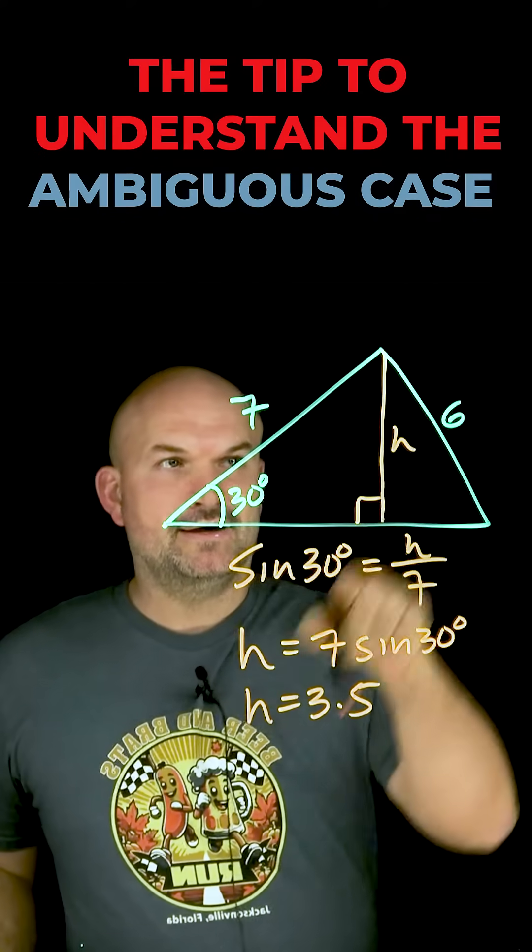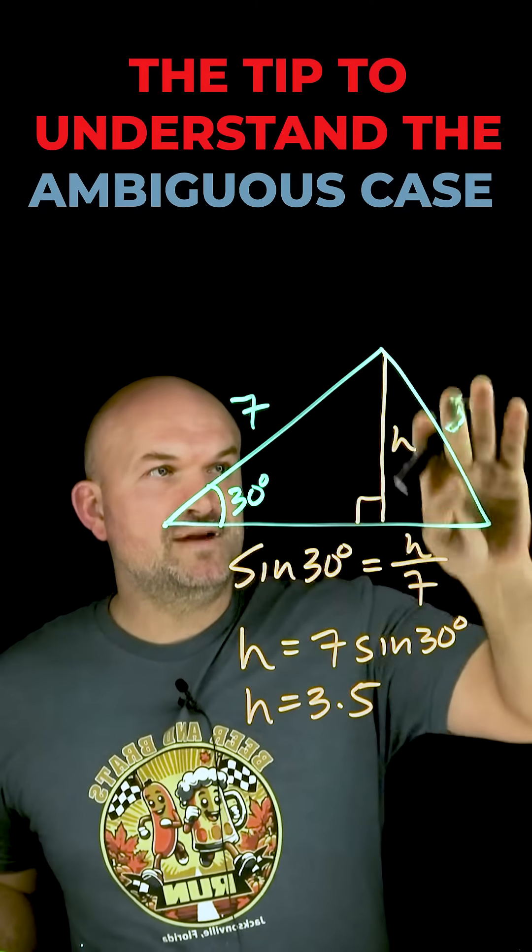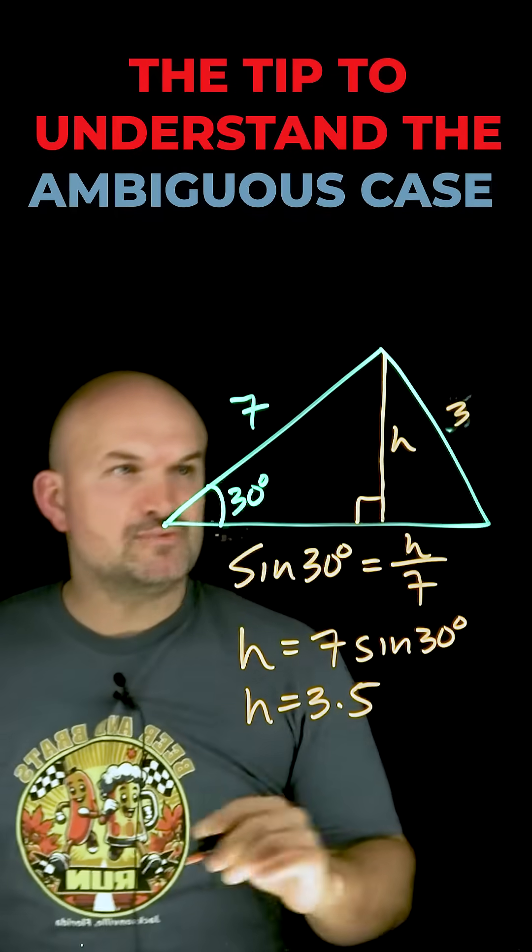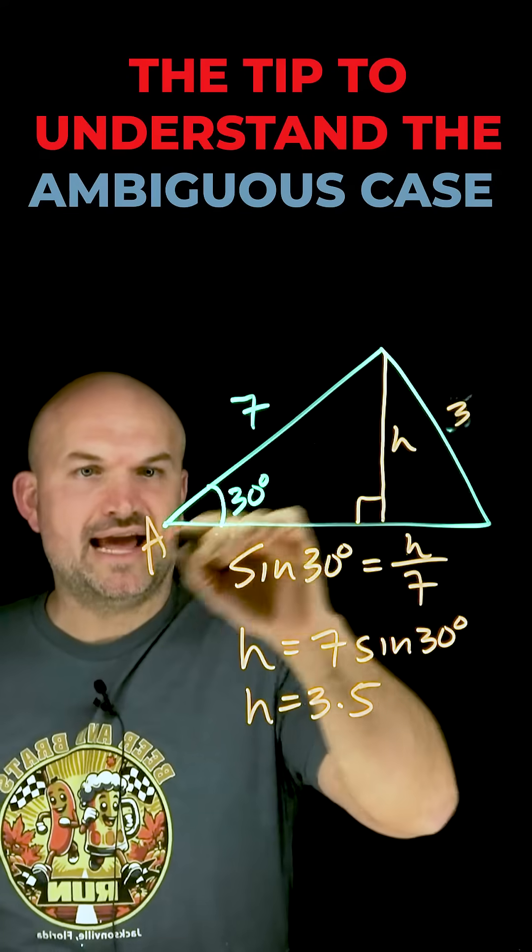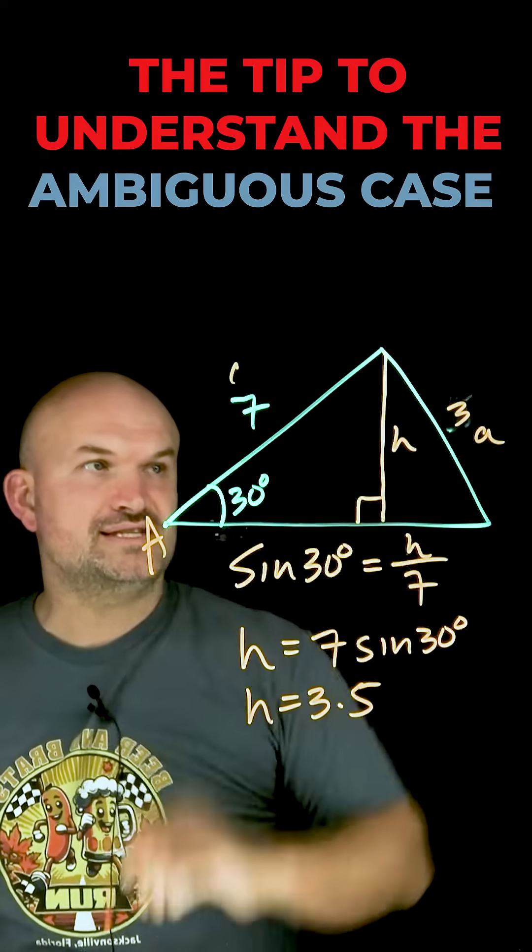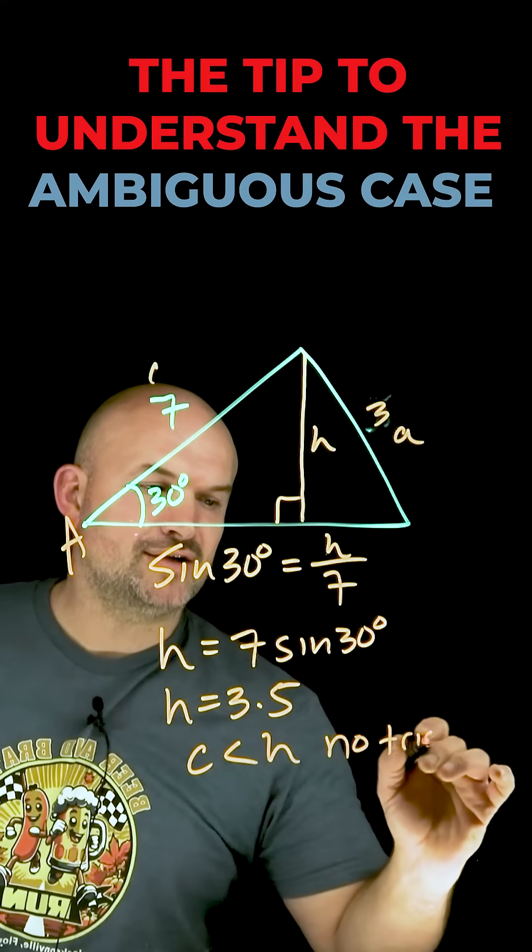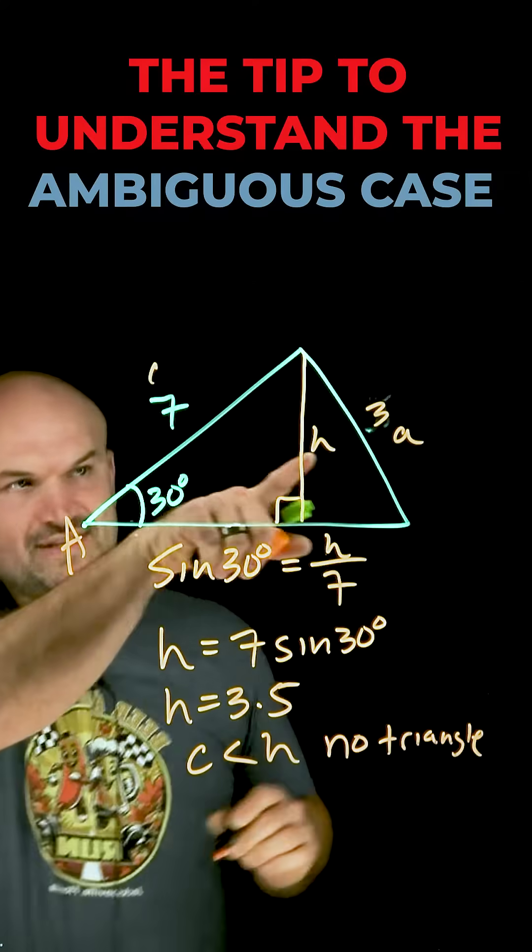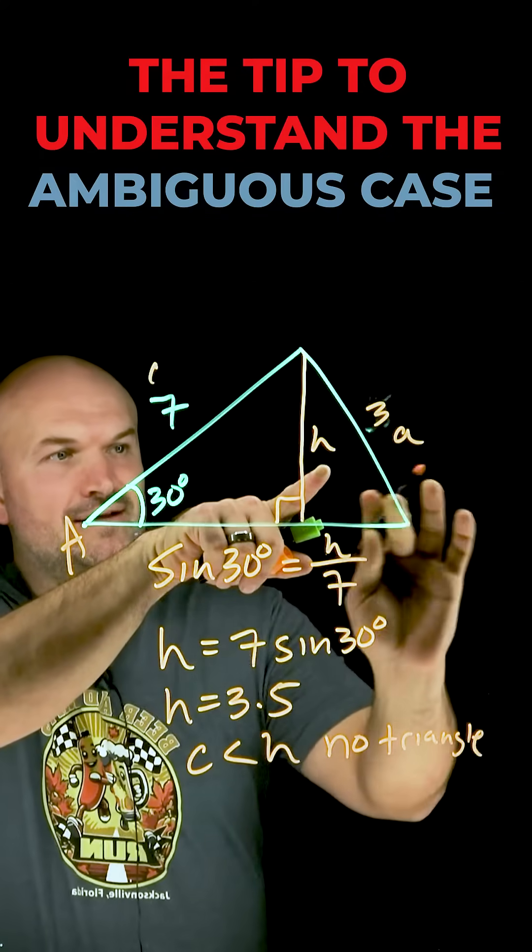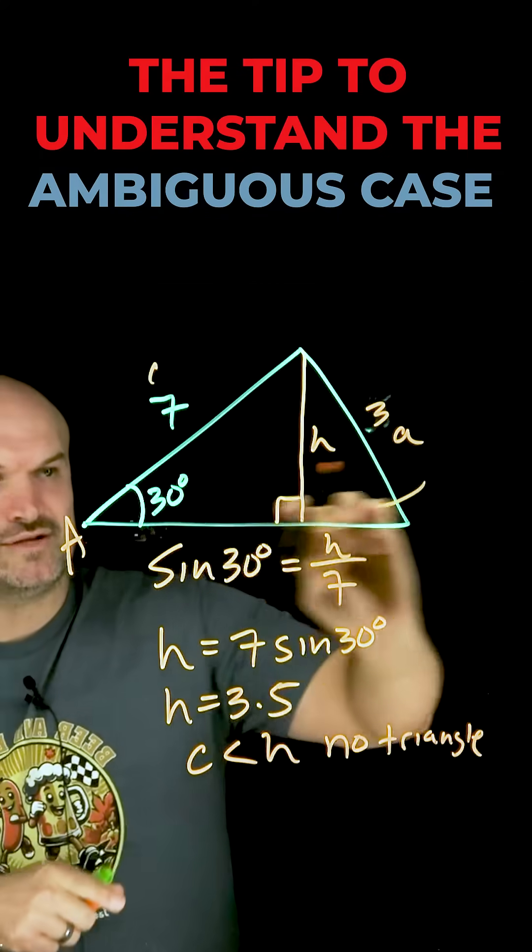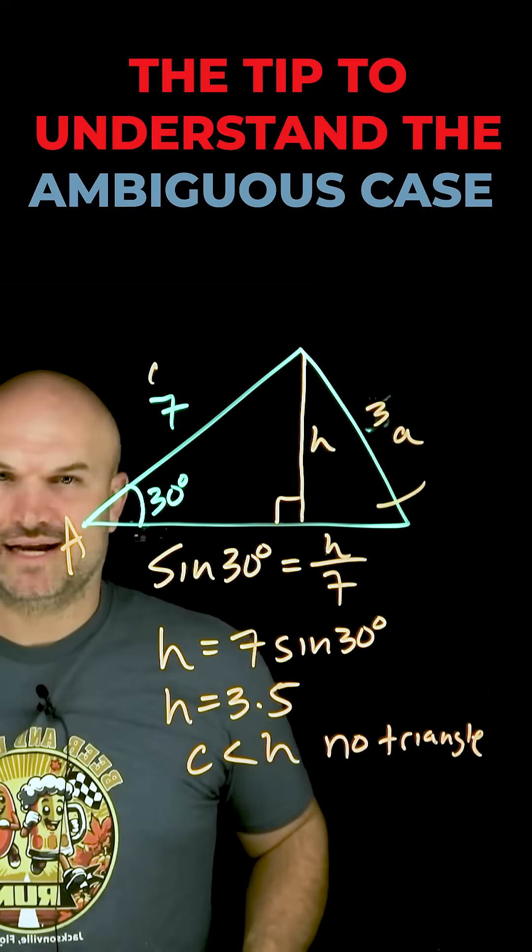So here's the key things. If, instead of this being six, what if this was a three? Now, I would have no solution. Because whenever you're, let's say, call this an A, this is little a, and let's call this C. Whenever your C is less than H, you have no triangle. Why would that make sense? Well, if this is 3.5 and this is three, then that's going to be shorter. And so therefore, no matter how far I rotate this around, it's never actually going to create a triangle.